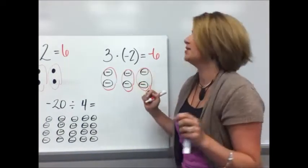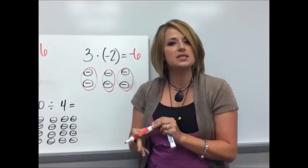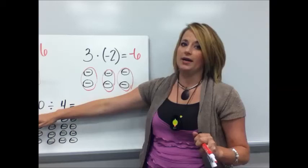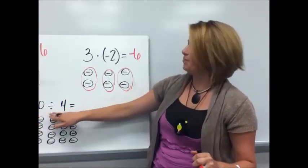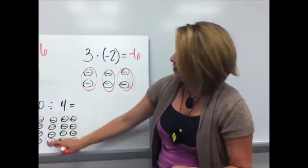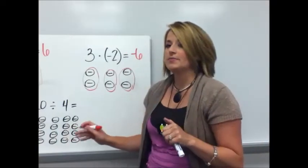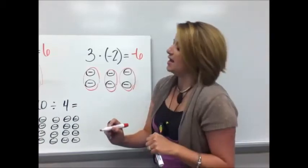Let's see how this works with dividing. Dividing in its most basic form means to split things up into even groups. So let's take negative 20 and let's split that up into four groups. Right there are 20 negative counters. If you want to pause the video and count all those, be my guest, but just take my word for it that there's 20 negative counters.